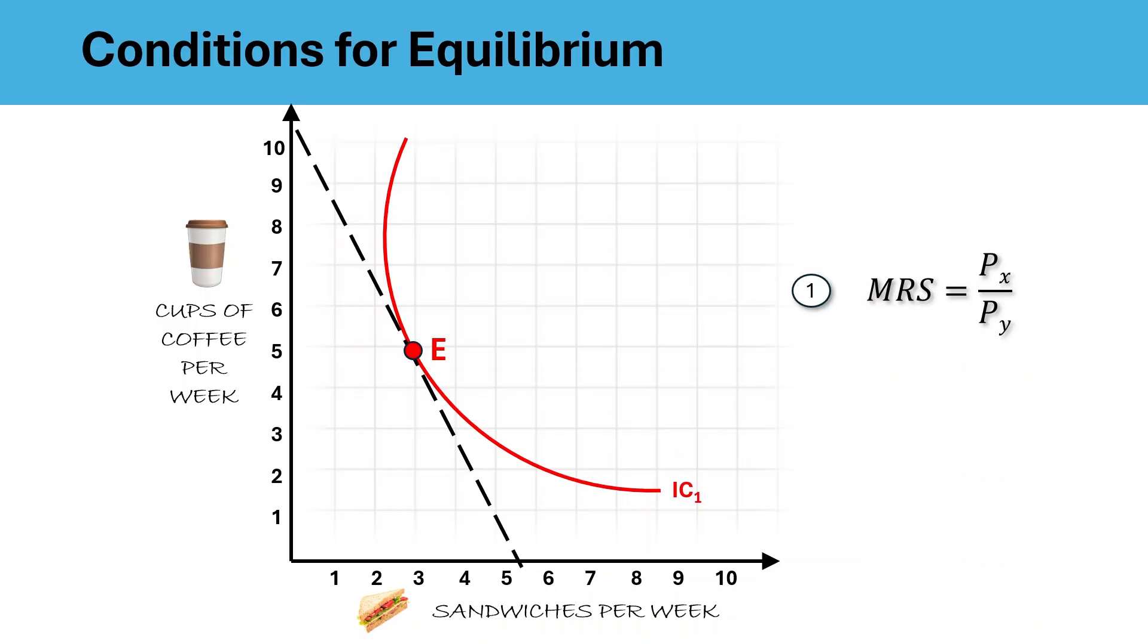If MRS is greater than price ratio, what does it mean? The consumer values X more than the market does. So they will keep buying more of X, in our case it is sandwiches, and giving up Y, which is coffee. This causes MRS to fall until it matches the price ratio and that's when equilibrium is reached.